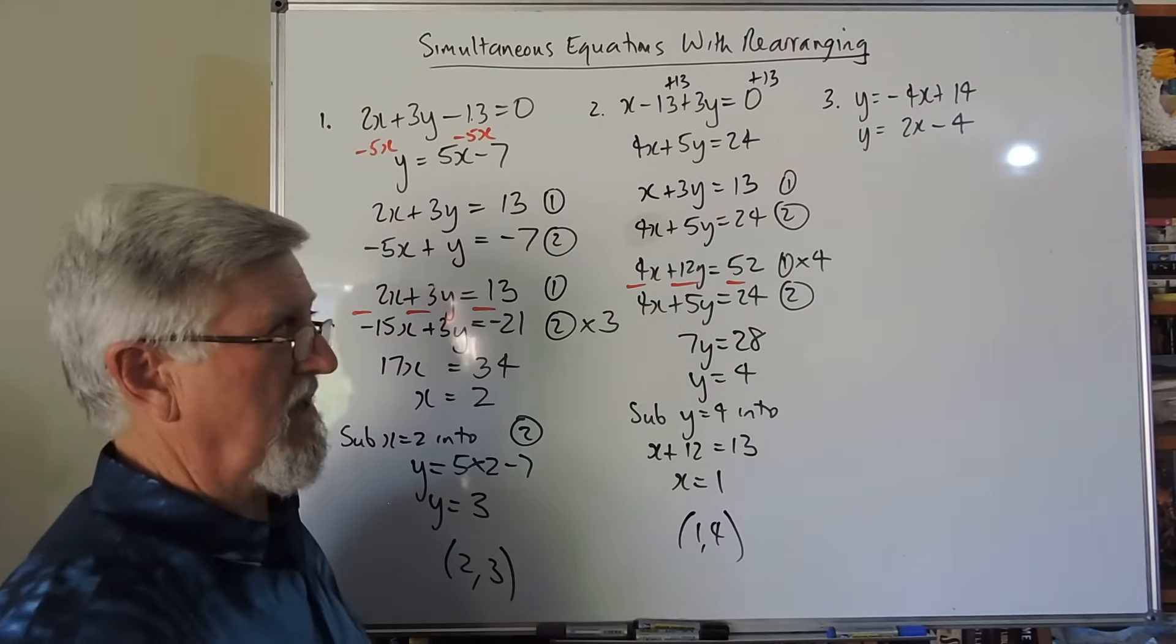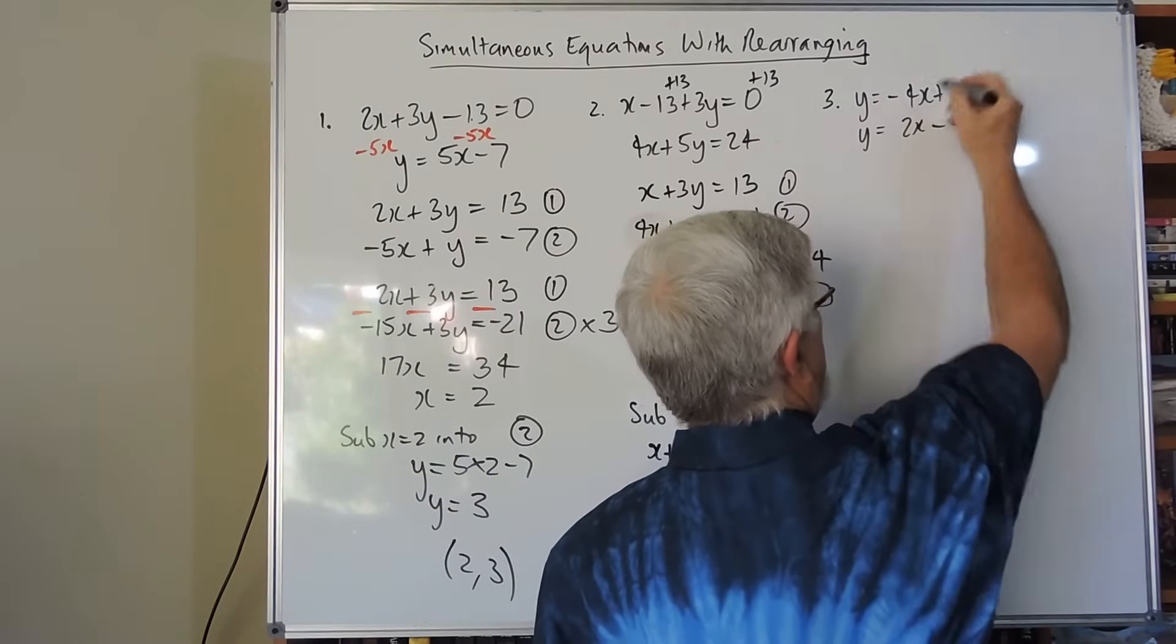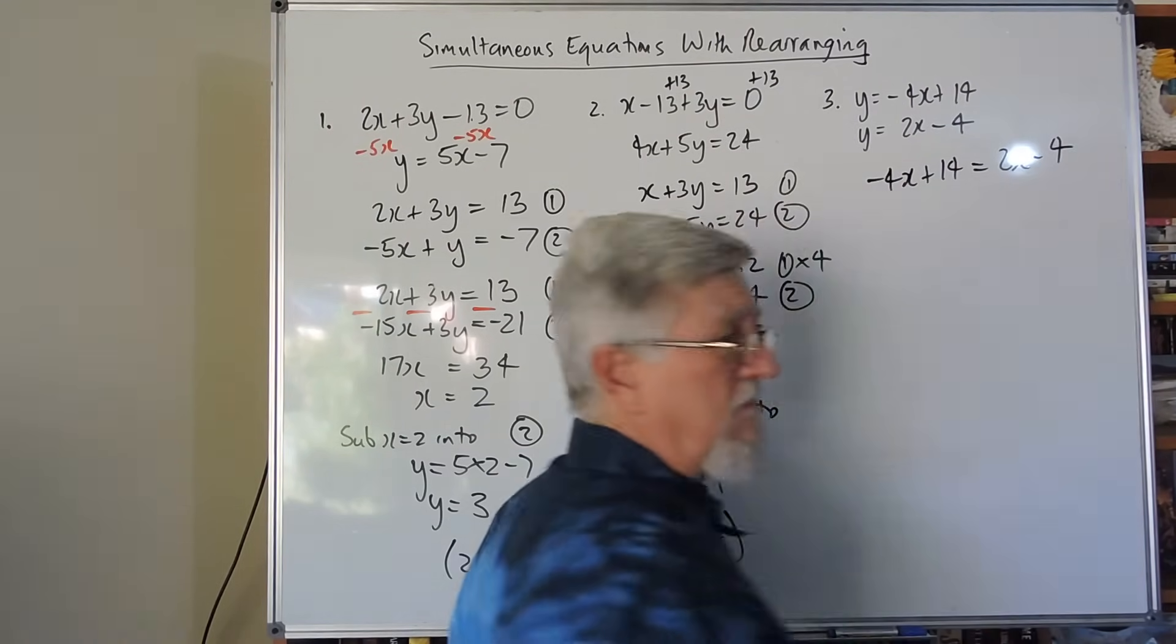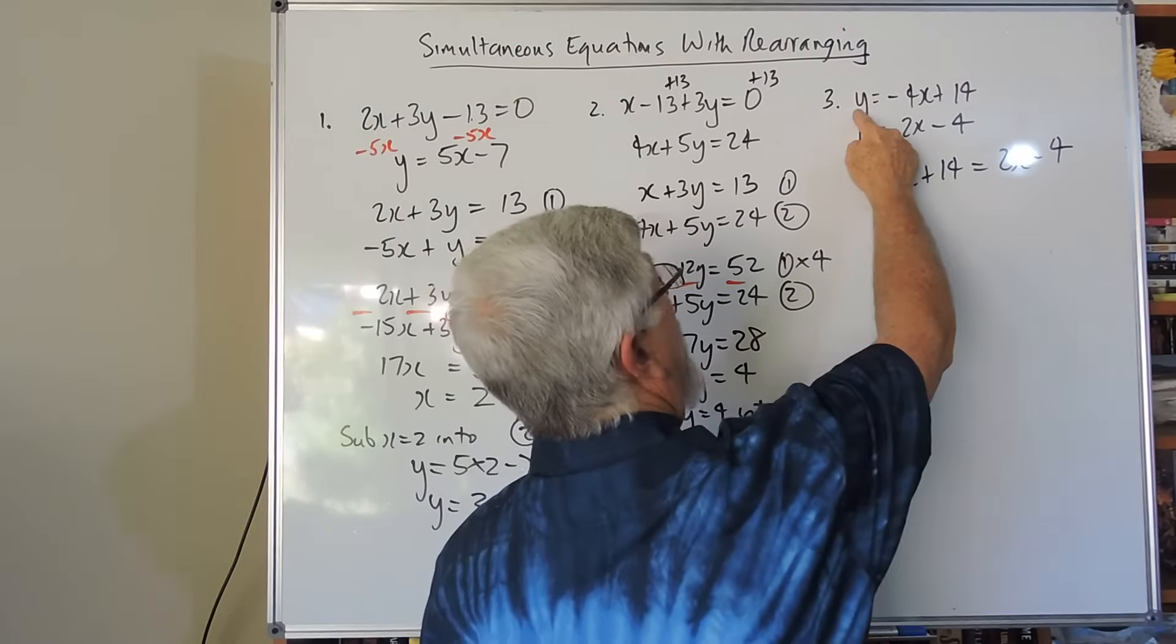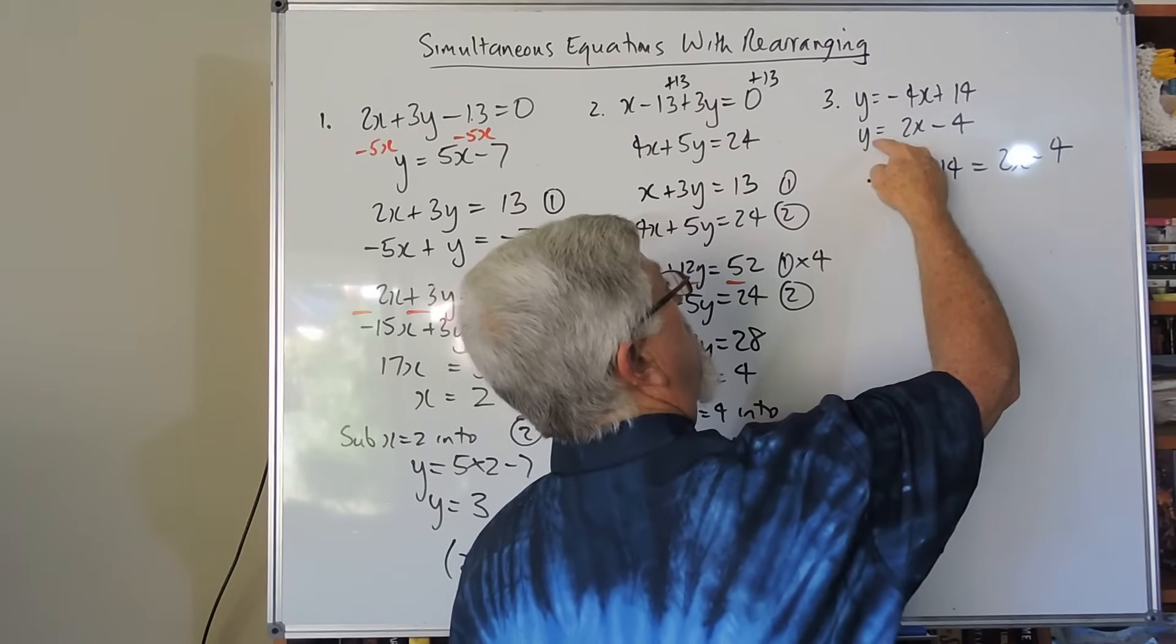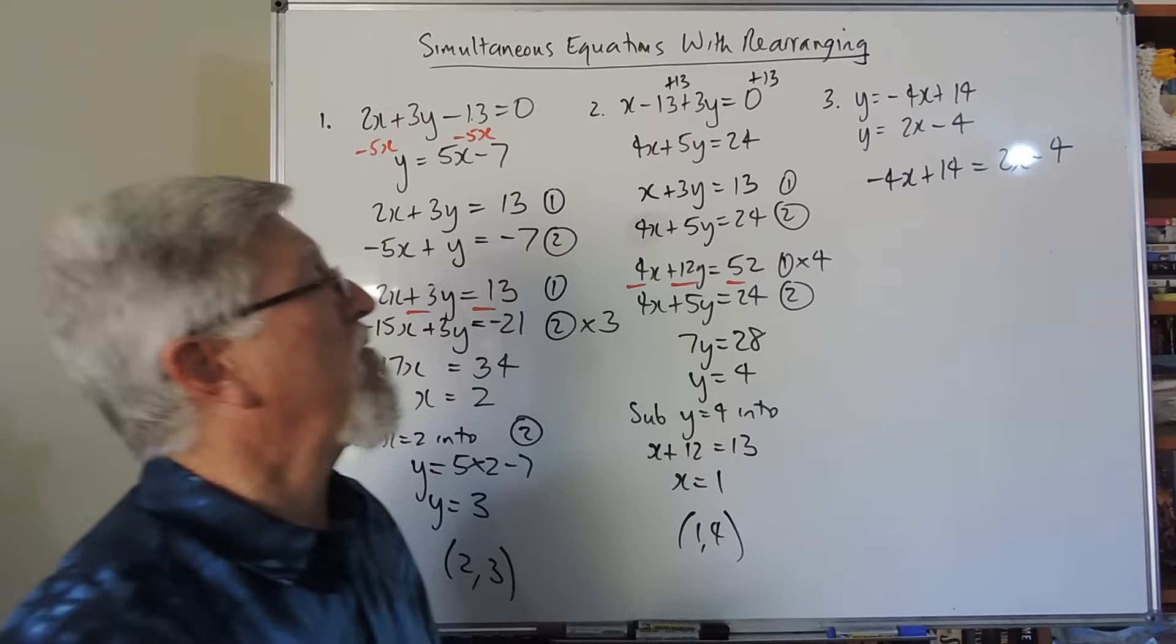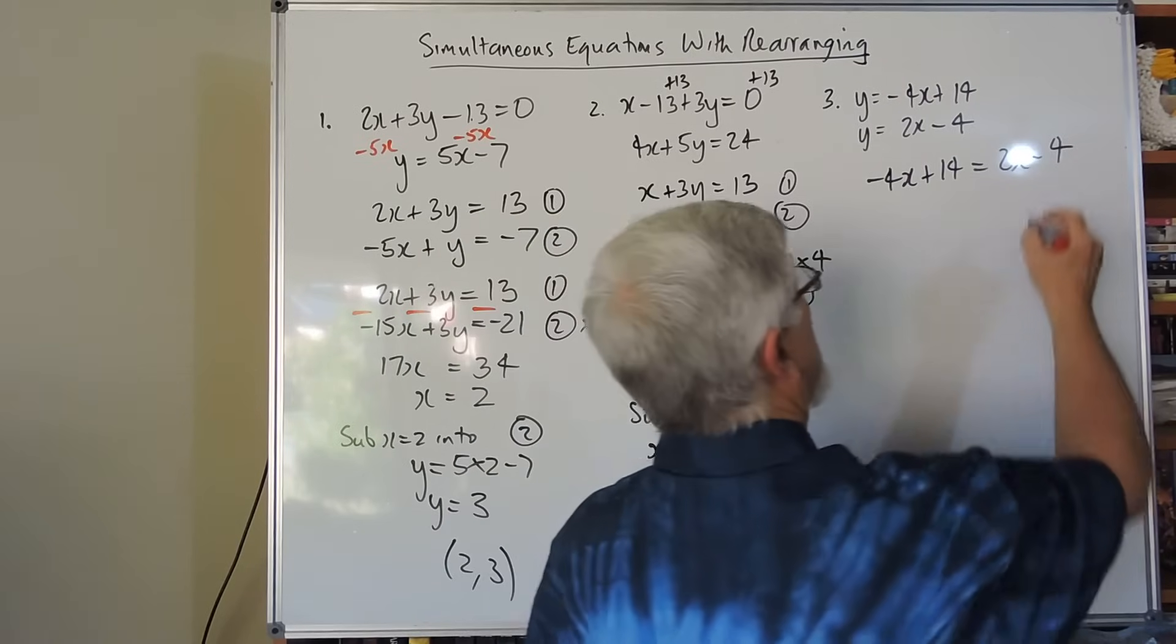Next one. This is so easy. If they both say y equals, I can simply make the two parts of this equal. So I've got a minus 4x plus 14 equals 2x minus 4. Really, it's substitution. A substitution is, wherever I've got y written on the other equation, I can replace it by what that y has become. So that y is minus 4x plus 14.